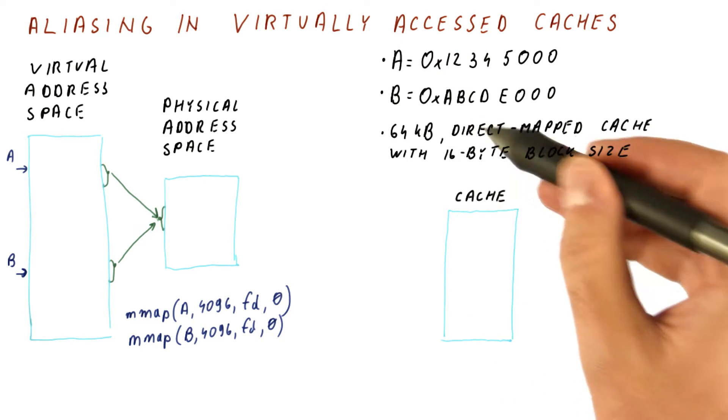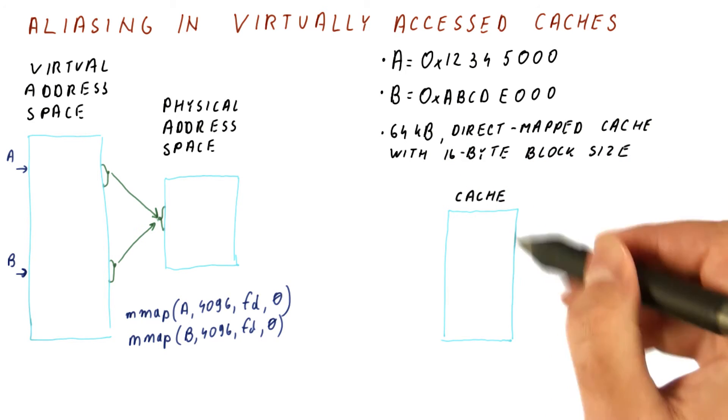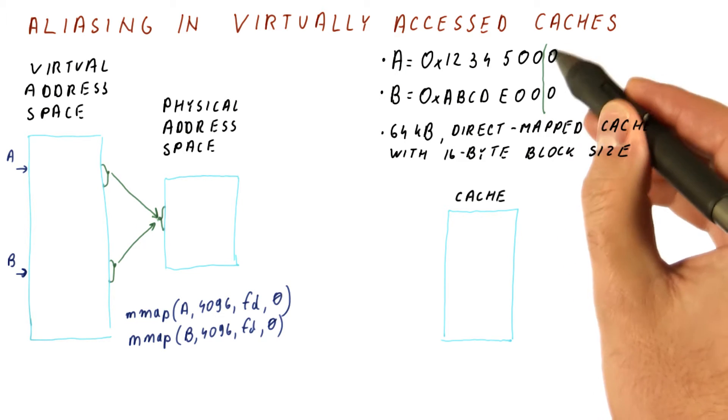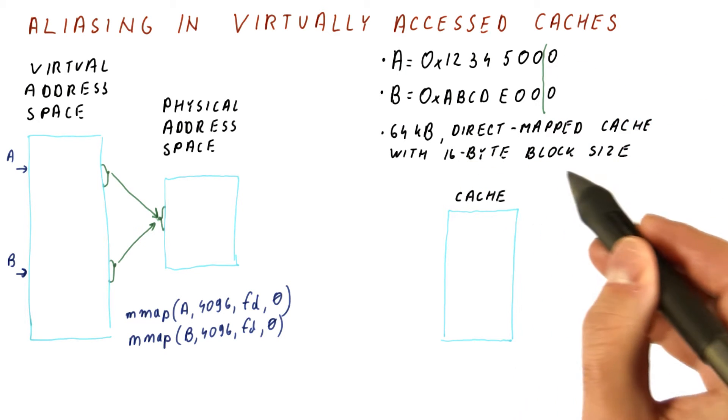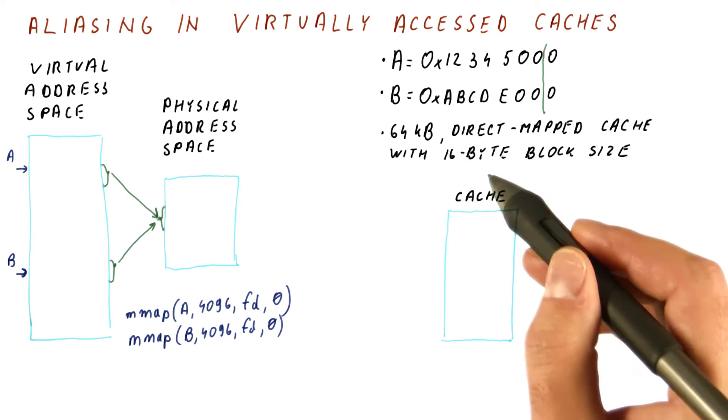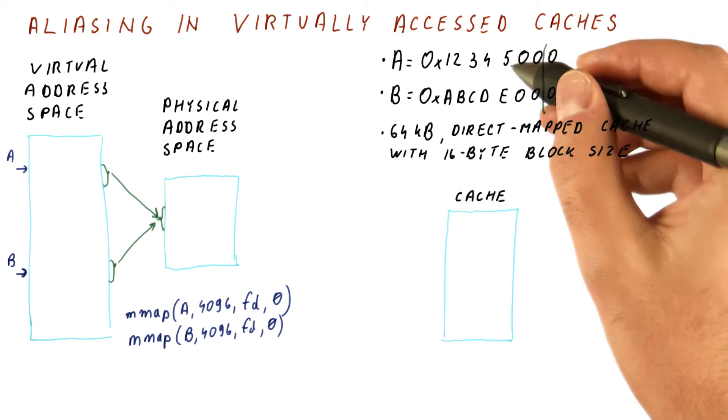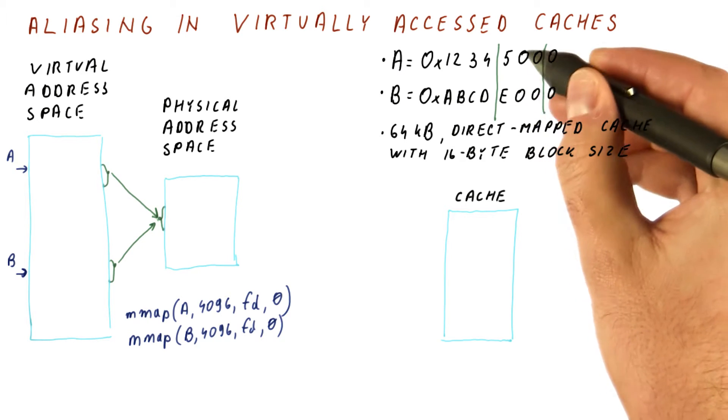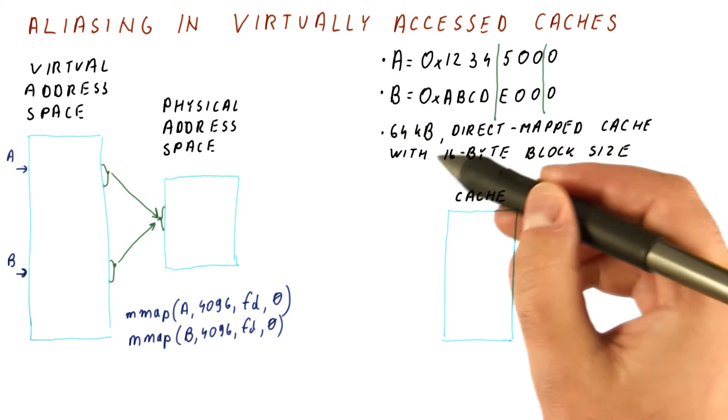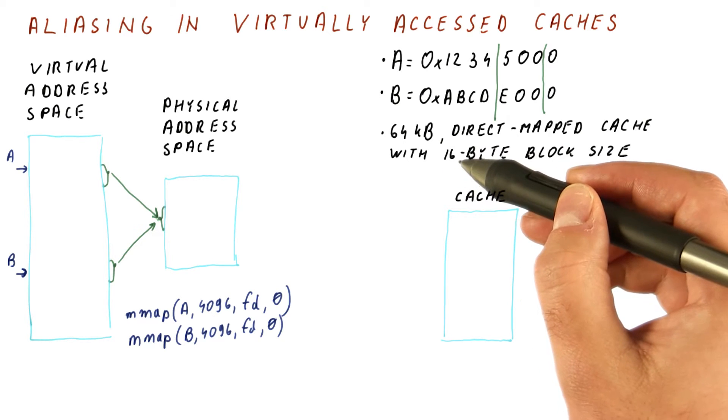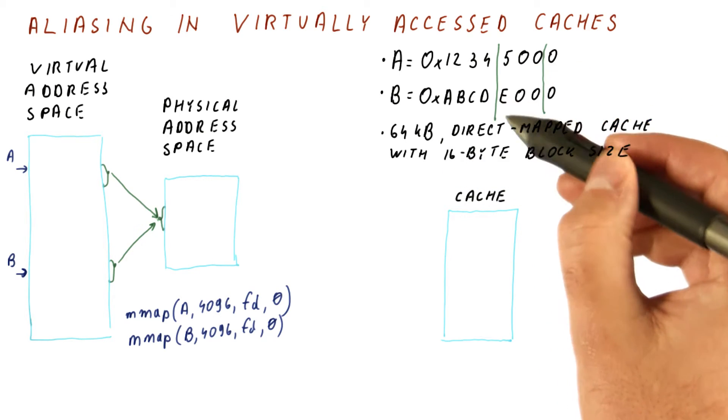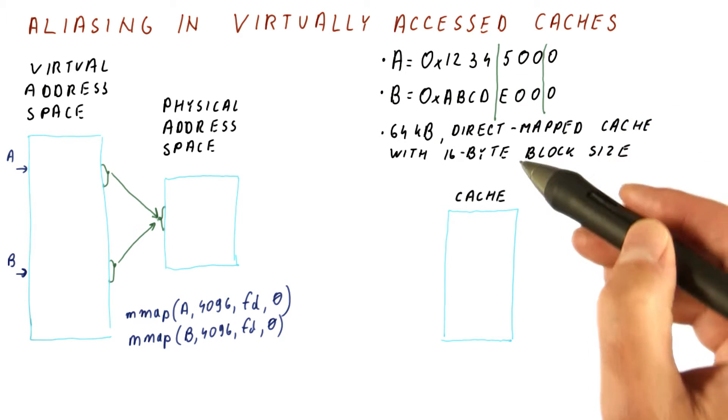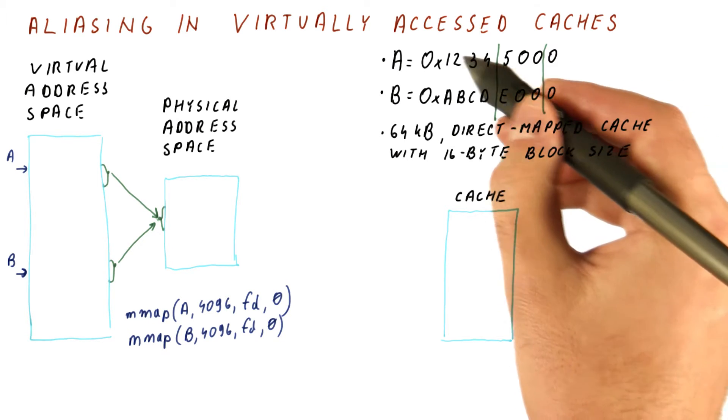So let's say that this is our 64 kilobyte cache. For this cache, we have a 4 bit offset part of the address because of the 16 byte block size. It's a 64 kilobyte cache. So the next 12 bits are going to be the index into this cache. 64 kilobytes divided by 16 bytes is 4 kilo entries. So we need 2 to the 12 index bits to tell us which index do we have. And the rest of the bits in the addresses are tags.